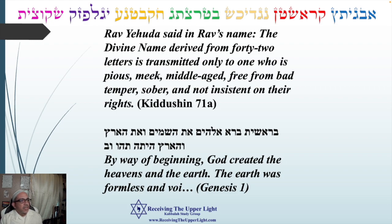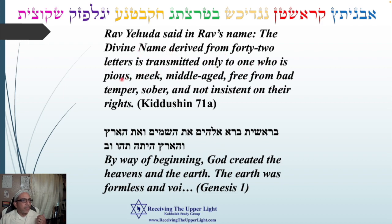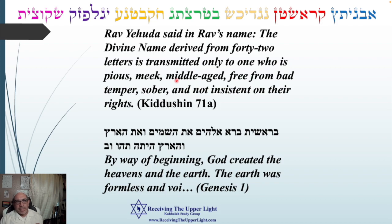It has to be in balance with spirituality and nature. Now, in Genesis 1 — 'In the beginning God created the heavens and the earth; the earth was formless and void' — right there are the first 42 letters of the Bible, the Torah, attributed to the 42-letter name of God. Going back to what Rabbi Yehuda said: it's transmitted only to those who are pious — a person that is already spiritual, with well-intentioned manner. Meek and middle-aged means mature, not childish or irresponsible in thinking when using this name.